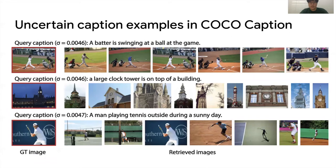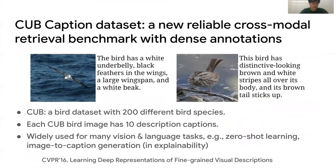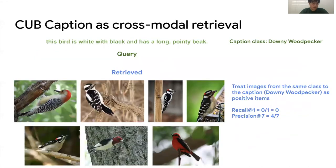We also visualize the uncertain captions and the retrieved items, and observe a similar result. We observe that LICRABON is actually correlated with the uncertainty by PINGMI. We also propose a new reliable cross-modal retrieval benchmark with dense annotations, CUV captions. This dataset is widely used for zero-shot classification or image-to-explanation generation tasks. We use the class information to measure precision score, and we have similar conclusions in CUV as well as MS-COCO results.